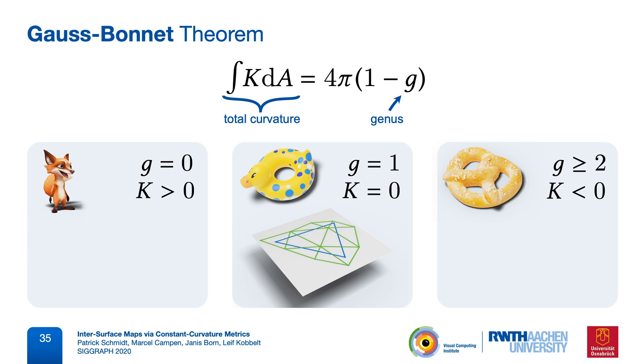A metric with constant positive curvature is a spherical metric. So we can think of all these edge lengths that we assign as the length of arcs on the unit sphere. Metrics with constant negative curvature are called hyperbolic metrics. So here, edge lengths correspond to lengths in the hyperbolic plane.